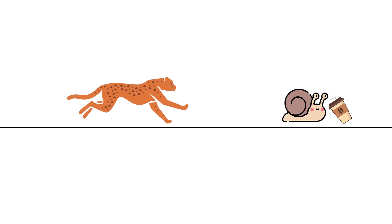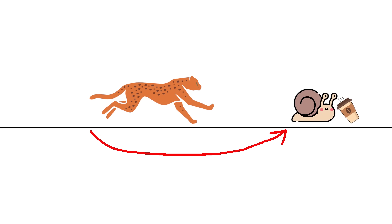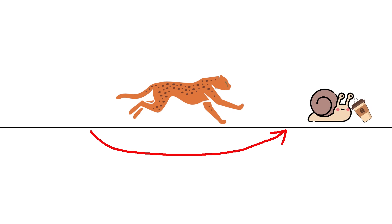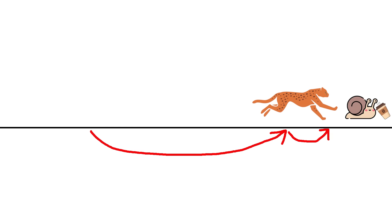Before the cheetah can catch the snail, it must reach the point where the snail started. But in the time it takes to do this, the snail slithers a little further forward. So next, the cheetah must reach this new point. But in the time it takes the cheetah to achieve this, the snail inches forward a tiny bit further. And so on to infinity.